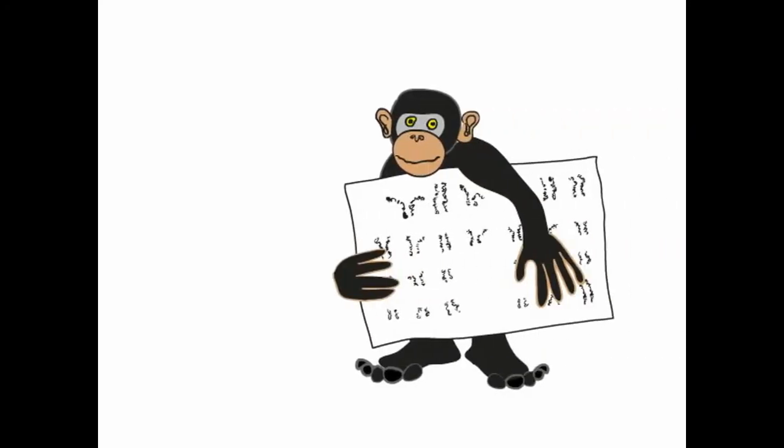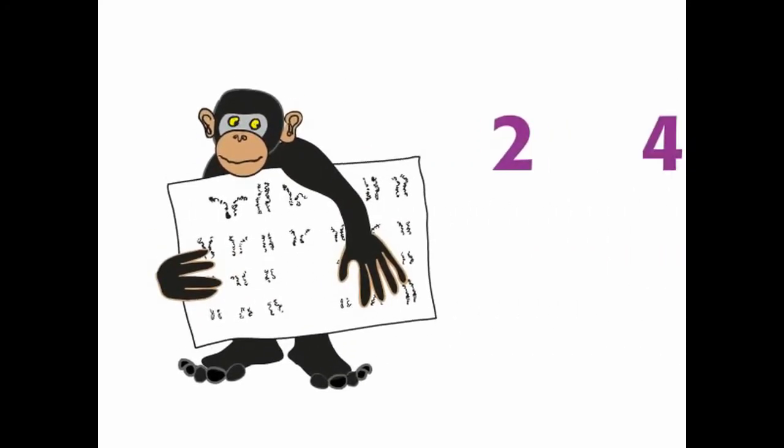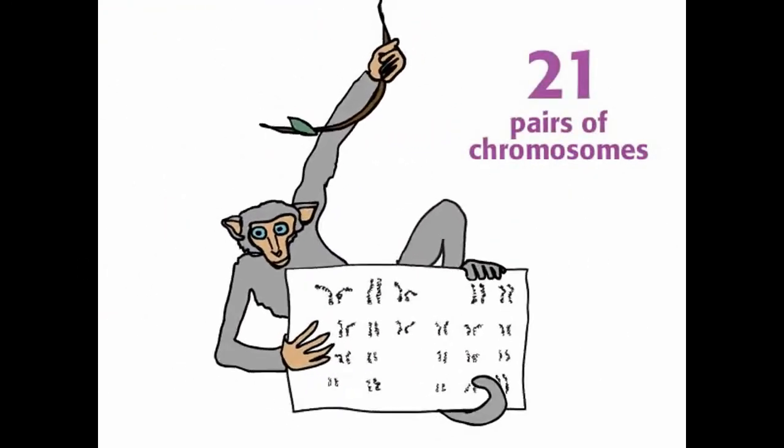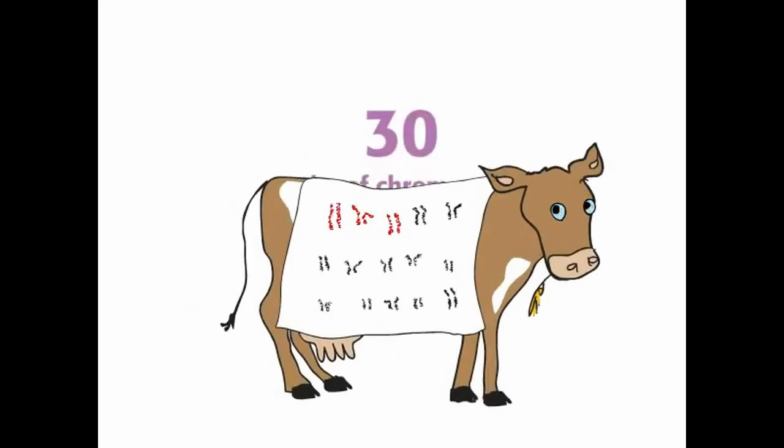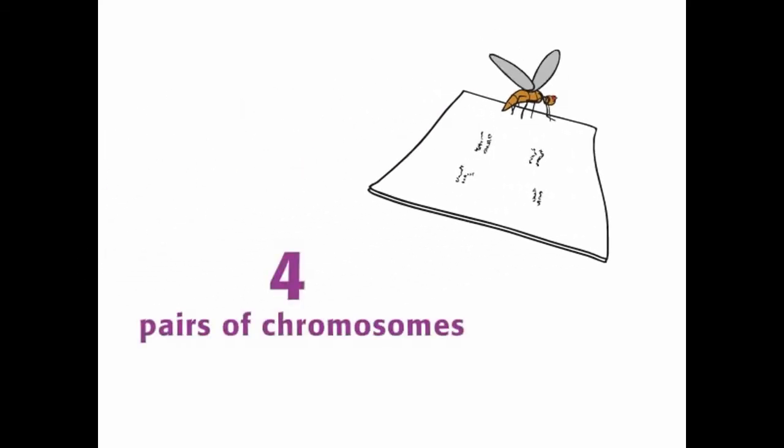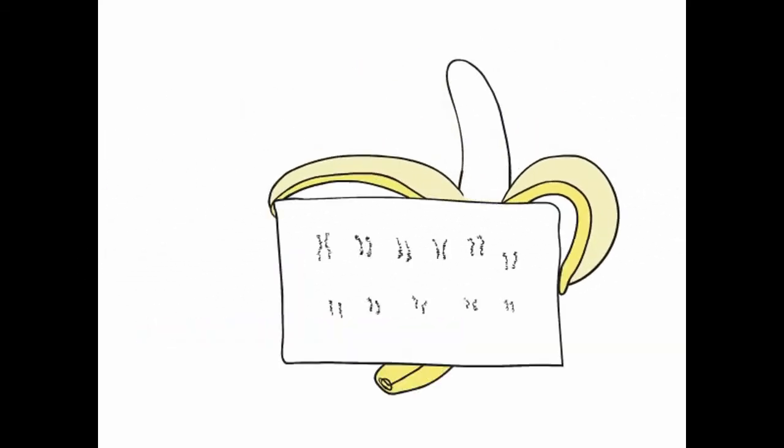Chimpanzees have two sets of 24, or 24 pairs of chromosomes. Rhesus monkeys have 21 pairs of chromosomes. Cows have 30 pairs of chromosomes. Chickens have 39 pairs. Fruit flies have 4 pairs. And bananas have 11 pairs.